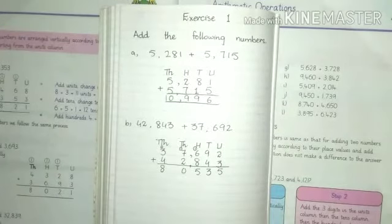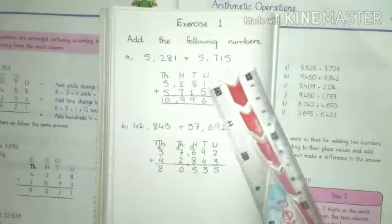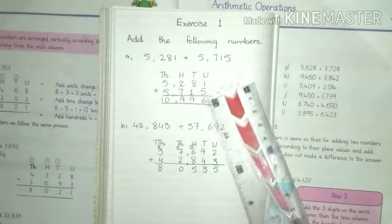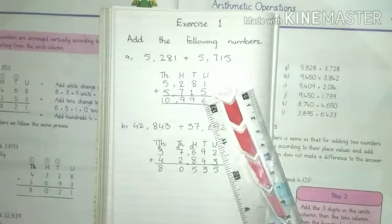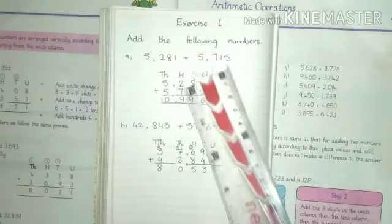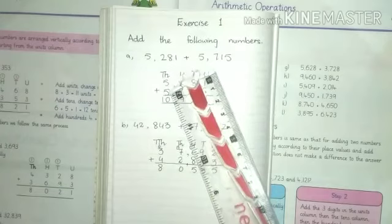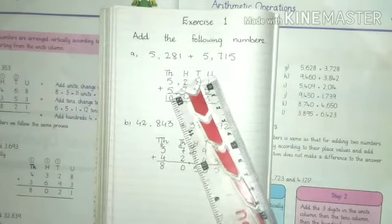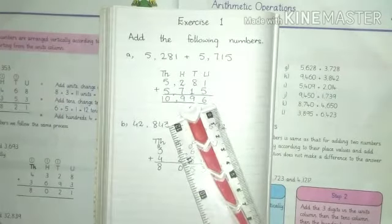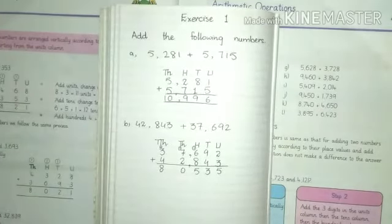You know addition always we will start from unit side. 5 and 1 we will add. We know 5 and 1, 6. So answer we will write down. Then 8 and 1, 9 we will write. 2 and 7, again 9 we will write. 5 and 5, you know 10. So we will write complete 10 here. Our answer is 10,996. If you don't know addition in this way, you can draw lines, then you can do easily.